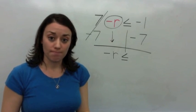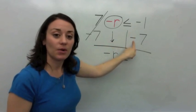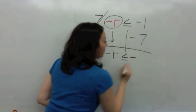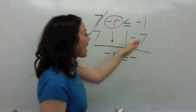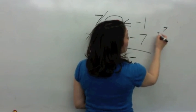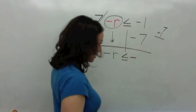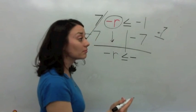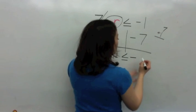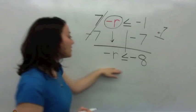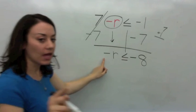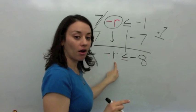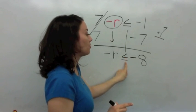What I want you to do from now on is when you see the same signs, say: negative, negative, negative. Say it with me: negative, negative, negative. Because they are the same signs, let's add 7 plus 1 because same signs add. What's 7 plus 1? 8. Very good. So it's negative 8. So now look at this inequality. It says — read it with me — negative r is less than or equal to negative 8.